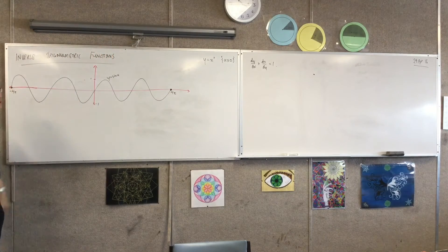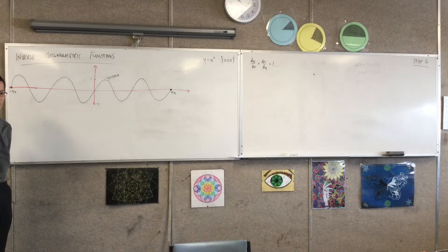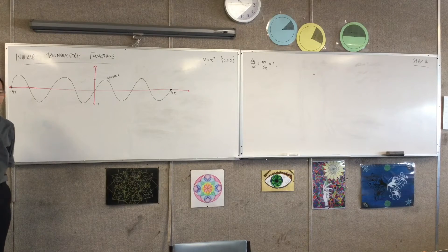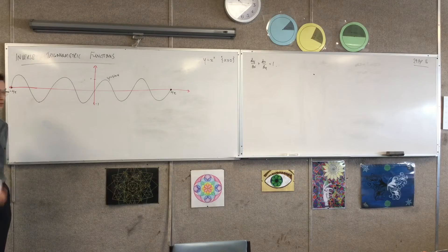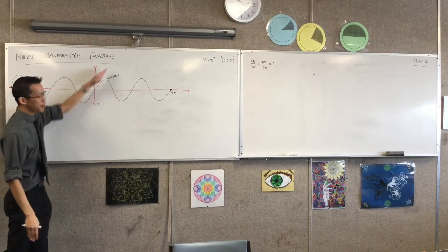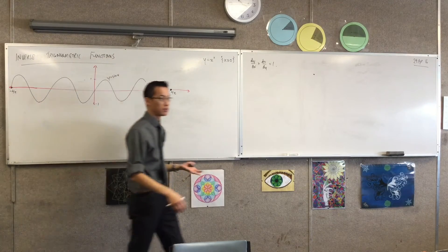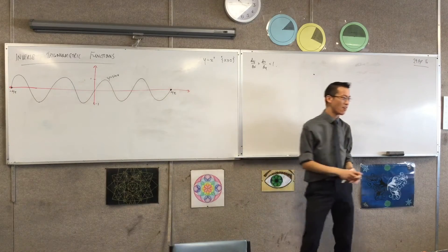If we were to do our swap of variables, do our reflection across y equals x, which by the way where is y equals x on this in relation to sin x? It's going to be, because we established this under calculus, it's coming right through here and it's tangential to sin x right.